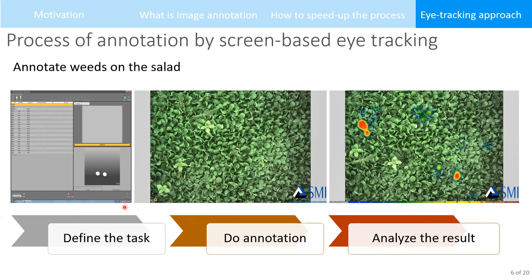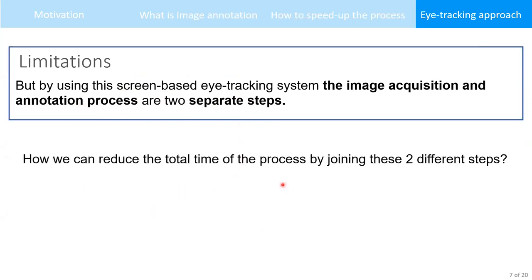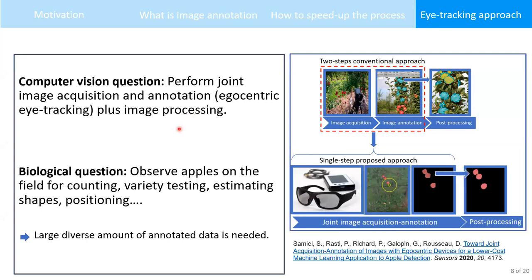Using this heat map approach we can analyze the result and annotate the weeds in the salad scene. By this approach we accelerated the annotation process 30 times more than manual annotation, and the results were accurate enough for the machine learning training phase. However, there are limitations: with screen-based eye tracking, image acquisition and annotation are two separate processes performed in the lab. We are thinking about how to reduce overall time by joining these two steps together — the solution could be using egocentric or glasses eye tracking devices.